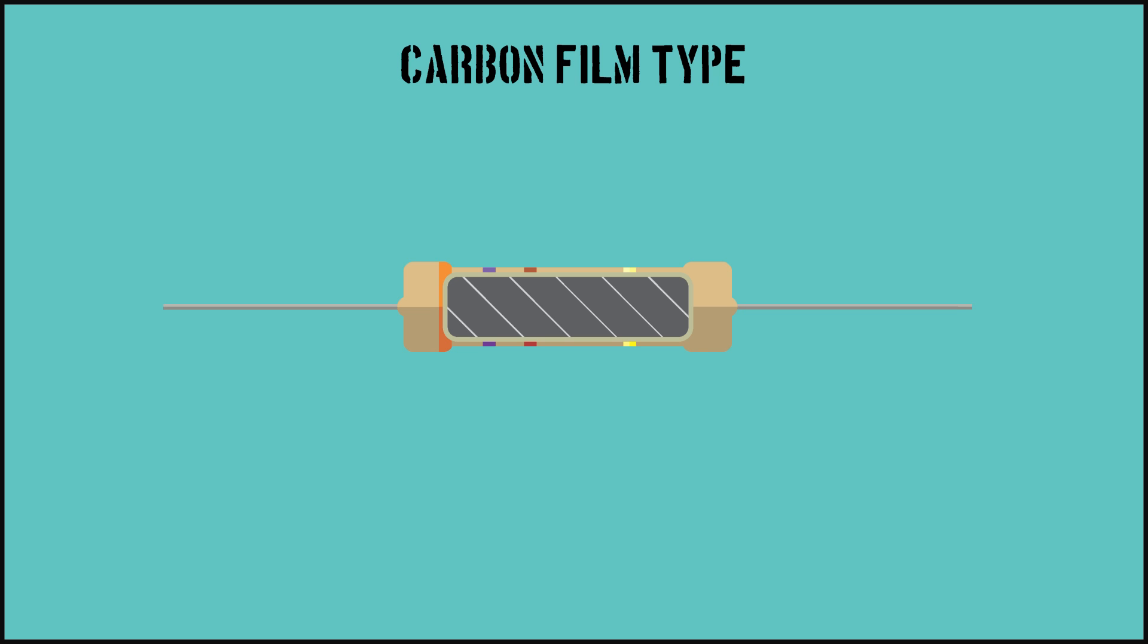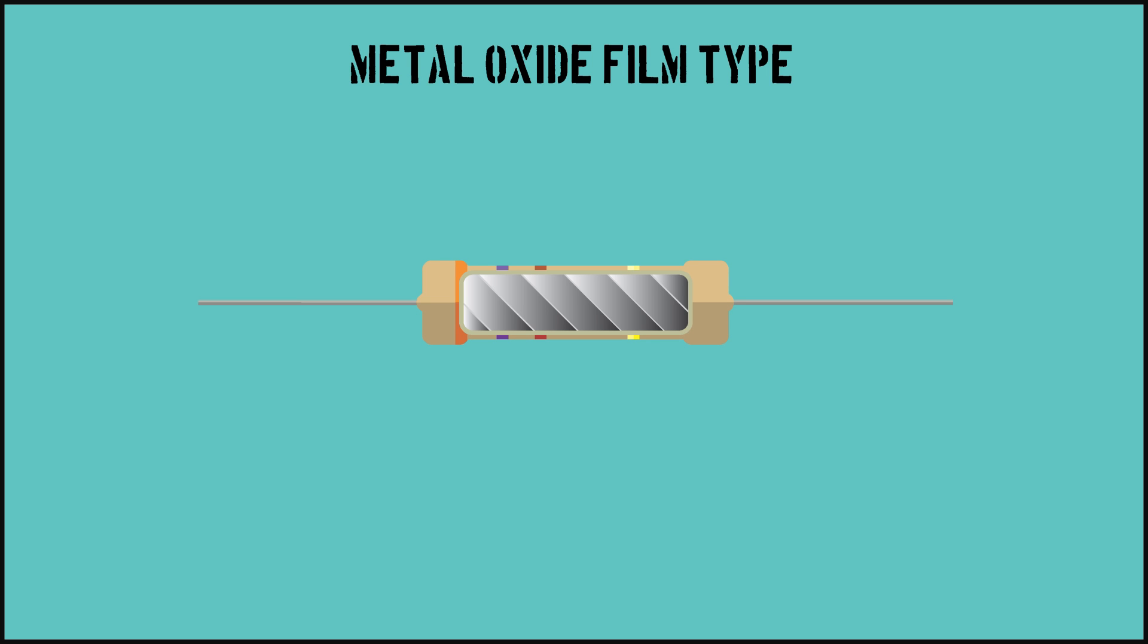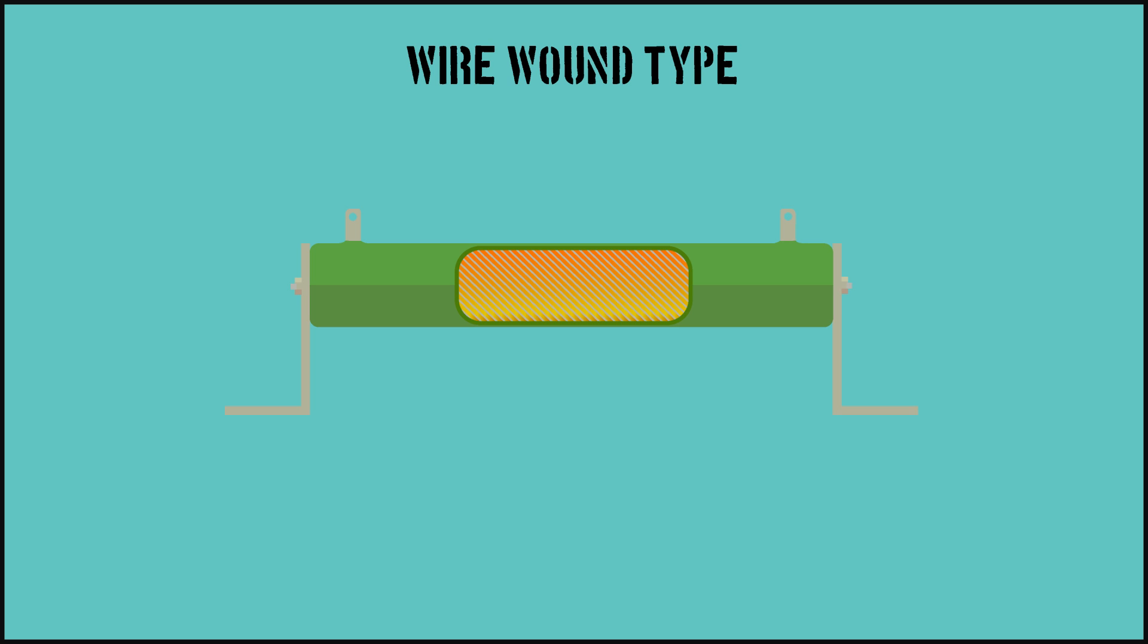Some types of fixed resistors are carbon film resistors, where a film of carbon material is wrapped around a ceramic cylinder in a helix. Metal oxide film resistors, where a metal oxide is wrapped in the same way. And wire wound resistors, which are often used for higher power applications.